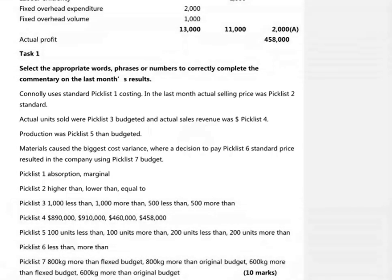One way in which the examiner can test your understanding of the subject quite thoroughly is rather than simply asking us to calculate things in the order that we are used to, as a straightforward variance calculation would give us. Here we're asked to work backwards, so the variances have already been calculated for us in this task, but we're asked a series of questions testing our understanding of how they were calculated and our ability to find missing pieces of the puzzle.